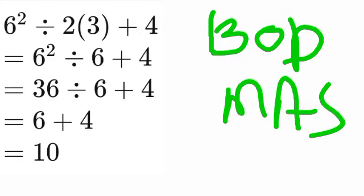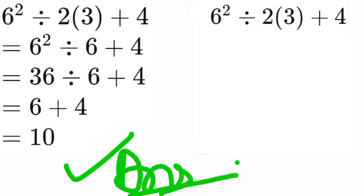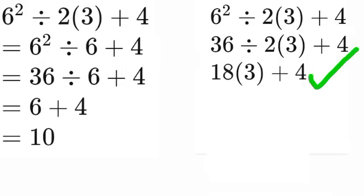The calculation continues: 6² ÷ 2(3) + 4. Working through each step, 36 ÷ 2(3) + 4, which gives us 18(3) + 4 = 54 + 4 = 58.